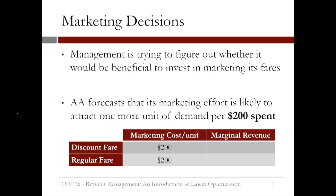One way that the data could change is through marketing decisions. Suppose that American Airlines management is trying to figure out whether or not it would be beneficial to invest in marketing its fares. They forecast that the marketing effort is likely to attract one more unit of demand of each type for every $200 spent. So for the discount fare, the marketing cost per unit is $200, and for the regular fare, the marketing cost per unit is also $200. We want to know how much this will increase our marginal revenue for each type of fare.